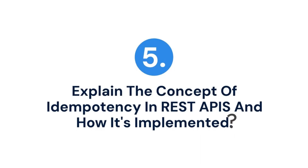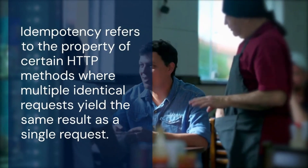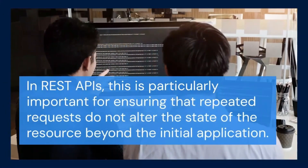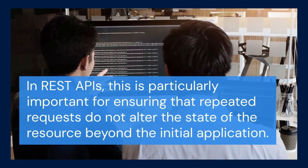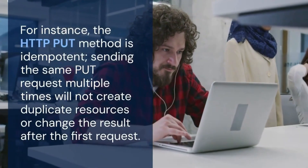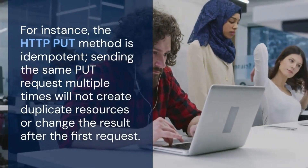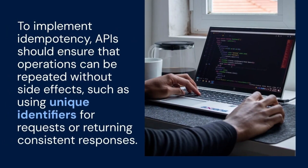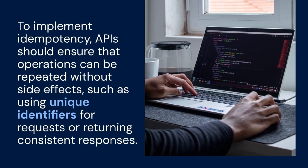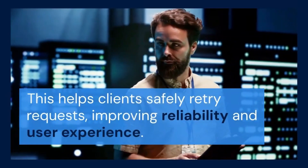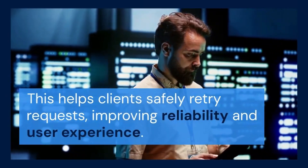5. Explain the concept of idempotency in REST APIs and how it's implemented. Idempotency refers to the property of certain HTTP methods where multiple identical requests yield the same result as a single request. In REST APIs, this is particularly important for ensuring that repeated requests do not alter the state of the resource beyond the initial application. For instance, the HTTP PUT method is idempotent — sending the same PUT request multiple times will not create duplicate resources. To implement idempotency, APIs should ensure that operations can be repeated without side effects, such as using unique identifiers for requests or returning consistent responses.